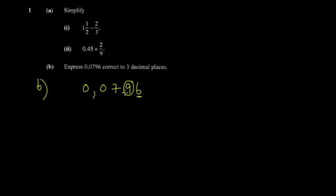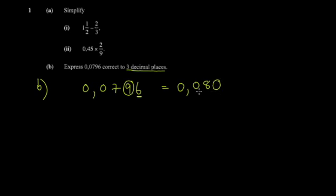If the next digit is five or more, you round up. The complication here is that the third decimal digit is nine — rounding it up makes ten, so you carry one to the digit before it. Some students write zero point, adjust the digit to eight, but forget to write the trailing zero. That's a problem, because they asked for three decimal places — you need that zero to show three decimal places.